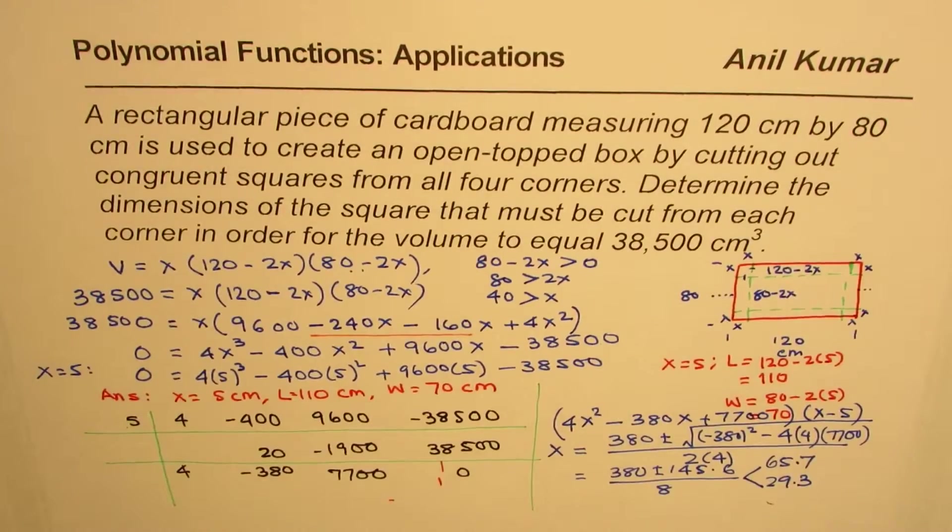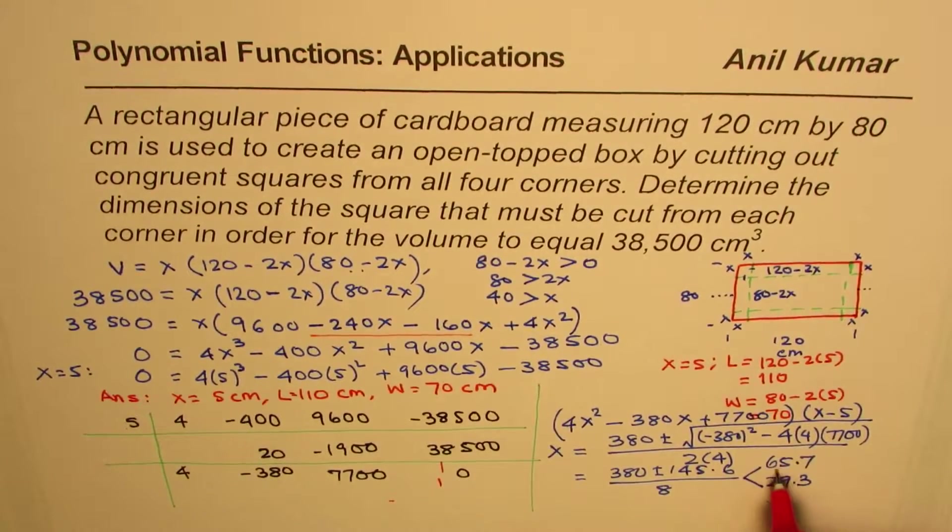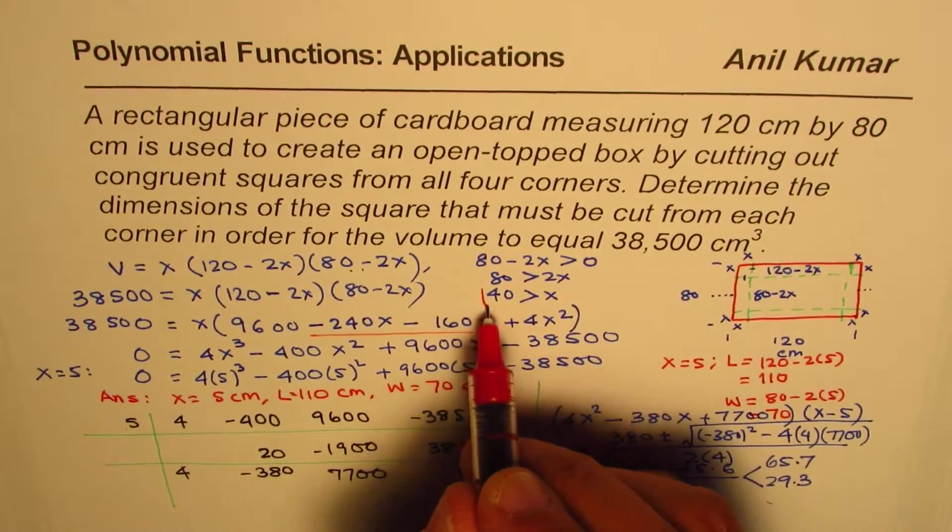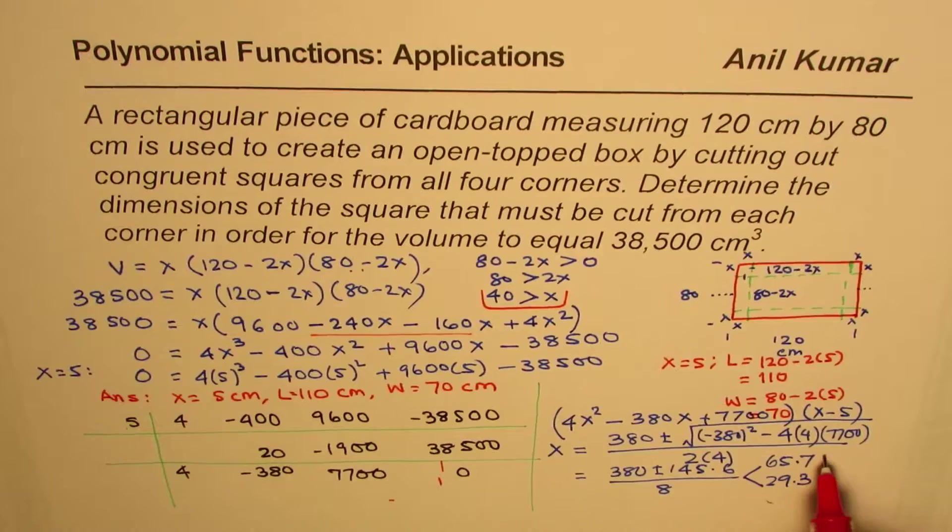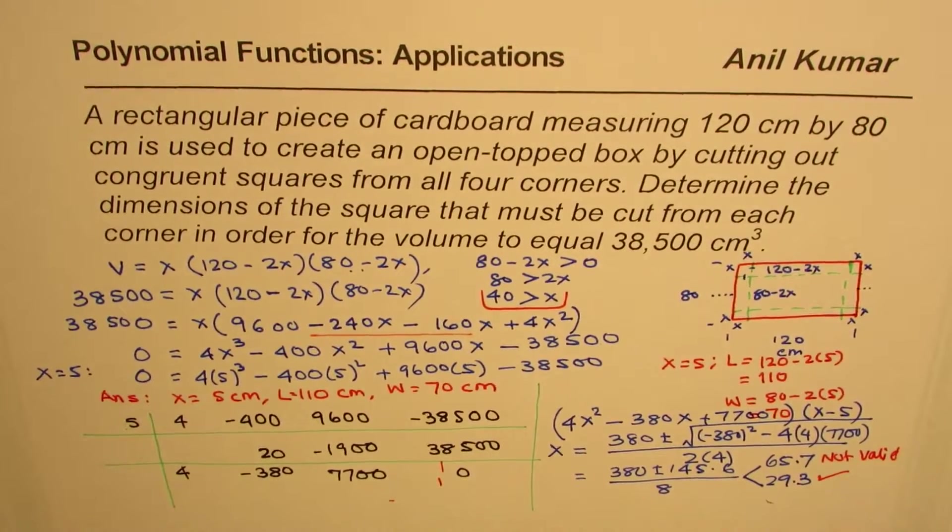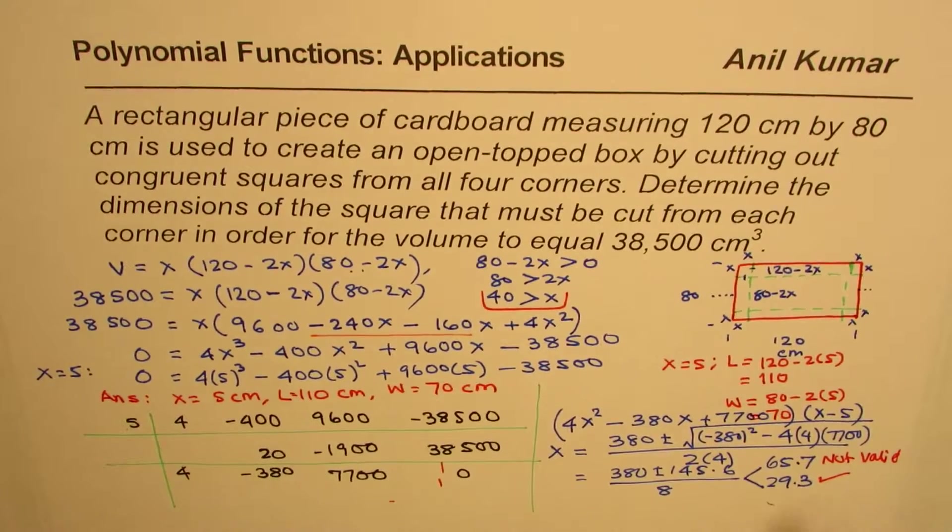Now, as you can see, the X cannot be 65.7, as our limit is 40. That's the limit. So that is not valid. However, this is a valid answer, 29.3 centimeters. So now, X could also be 29.3 centimeters. So let me just push this page a bit. So option 2 is, X equals to 29.3 centimeters.